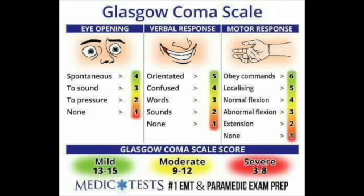The classification of severity is important with the Glasgow Coma Scale, scored between 3 and 15, with 3 being the worst and 15 being the best. It is comprised of three parameters: the best eye response (E), the best verbal response (V), and the best motor response (M). The components should be recorded individually — for example, E4, V2, M2 results in a GCS score of 8.